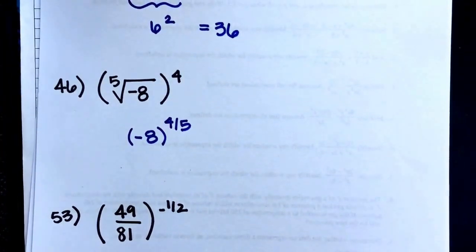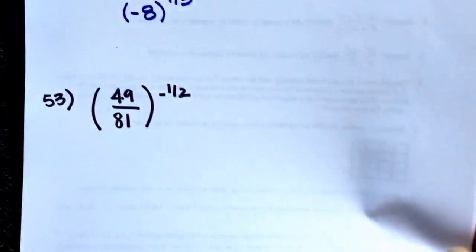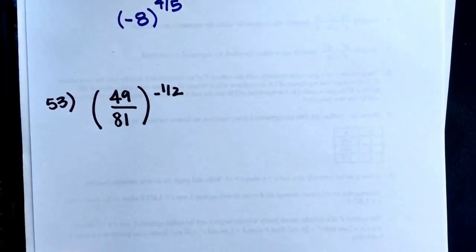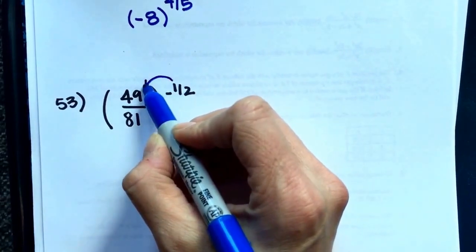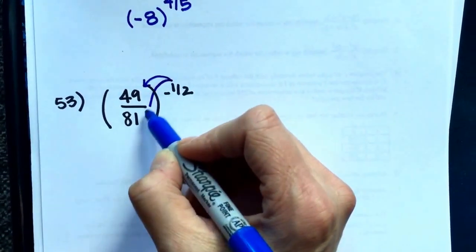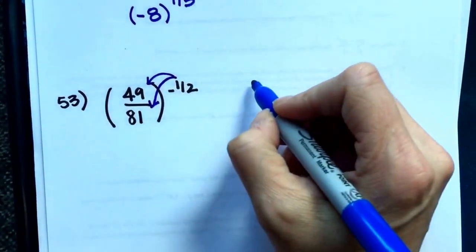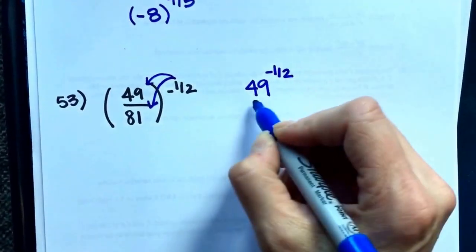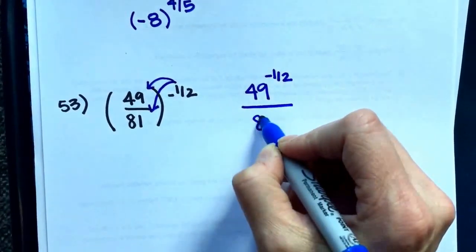And 53 I put in there partly because it has a negative exponent, partly because you have to distribute that exponent through. If you have a product or a quotient in parentheses with an exponent outside, that exponent gets distributed to both of them. So we get 49 to the negative 1 half and 81 to the negative 1 half.